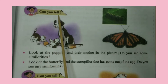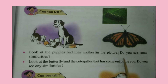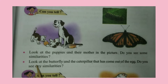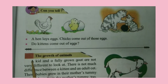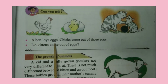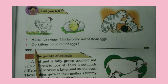Can you tell? Look at the puppies and their mother in the picture. Do you see some similarities? Look at the butterfly and the caterpillar that has come out of the egg. Do you see any similarities? A hen lays eggs. Chicks come out of those eggs. Do kittens come out of eggs?